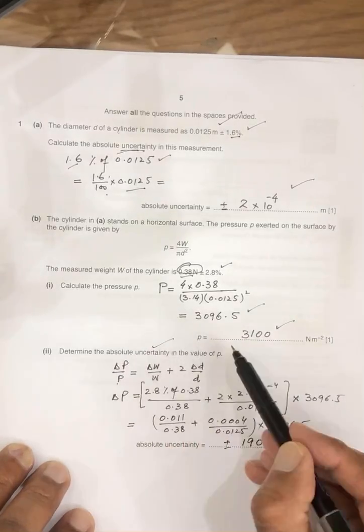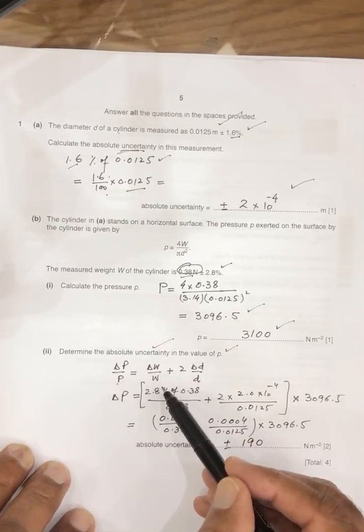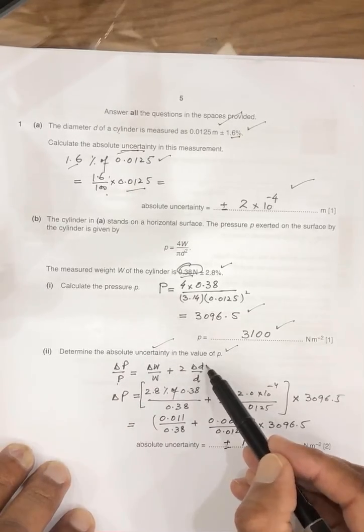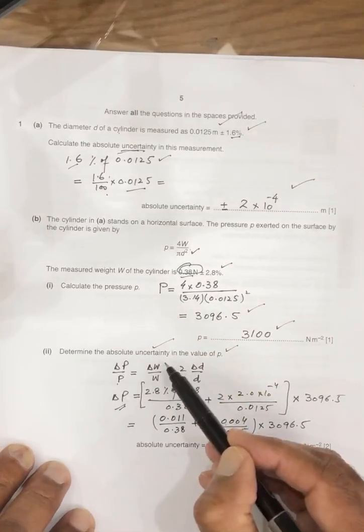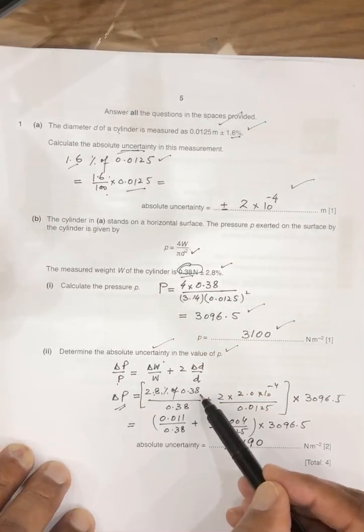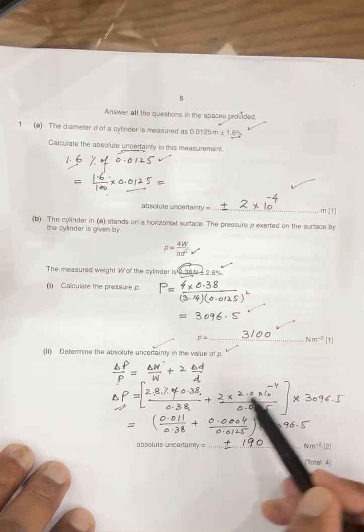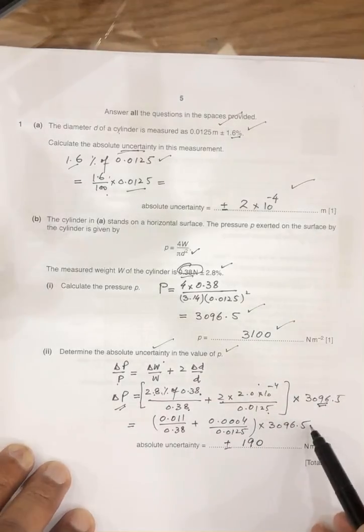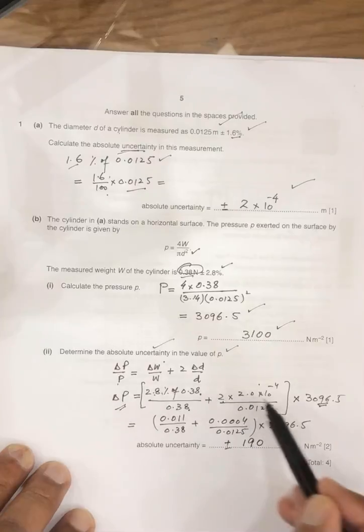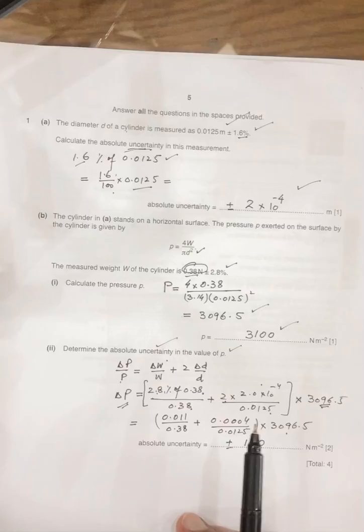Next question is absolute uncertainty in P required. So delta P over P, delta W over W, plus 2 times delta D over D, because here is a D square. So delta P, delta W, 2.8% of weight divided by weight, 0.28, plus 2 times delta D over D into pressure. Now, calculating this whole, we will get answer plus minus 190.